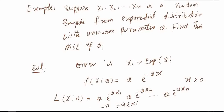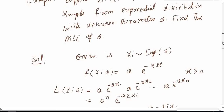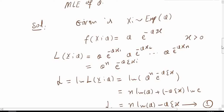What is given to us: xi is distributed exponentially with parameter theta. The procedure is we need to find the likelihood function, then calculate the natural log of the likelihood function, and then use the two-step procedure to calculate the MLE. The distribution of x is exponential, so f(x, theta) is equal to theta times e to the power of minus theta x. This is the density function of the exponential distribution.